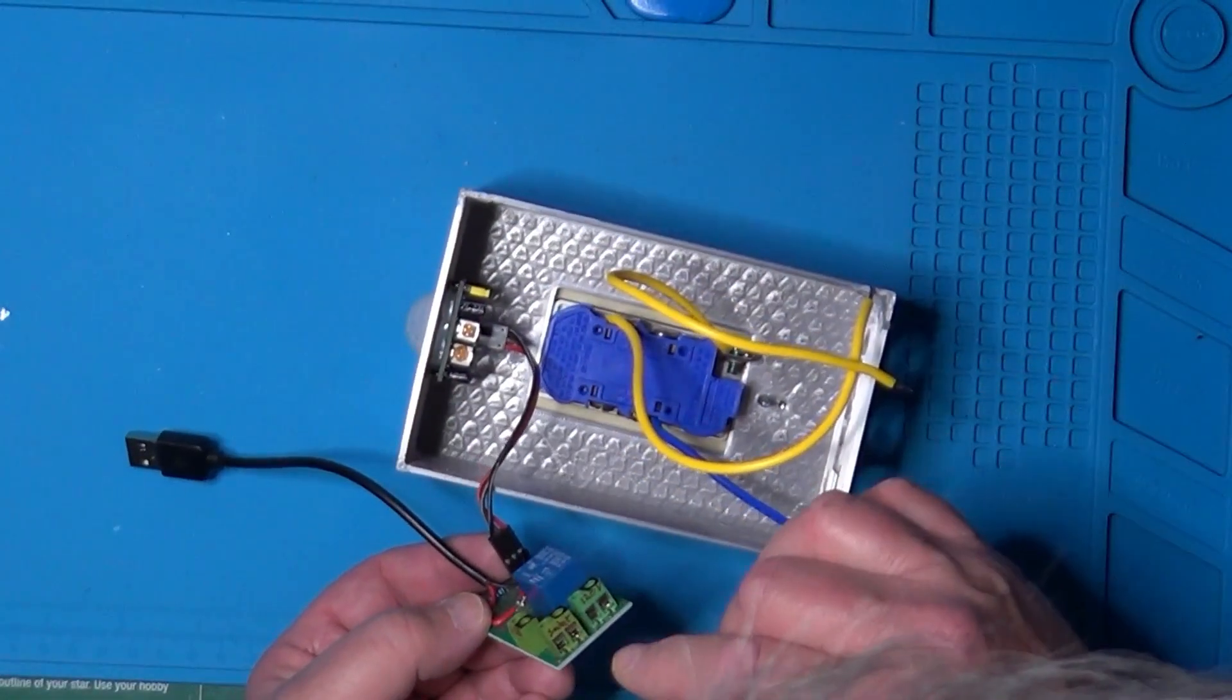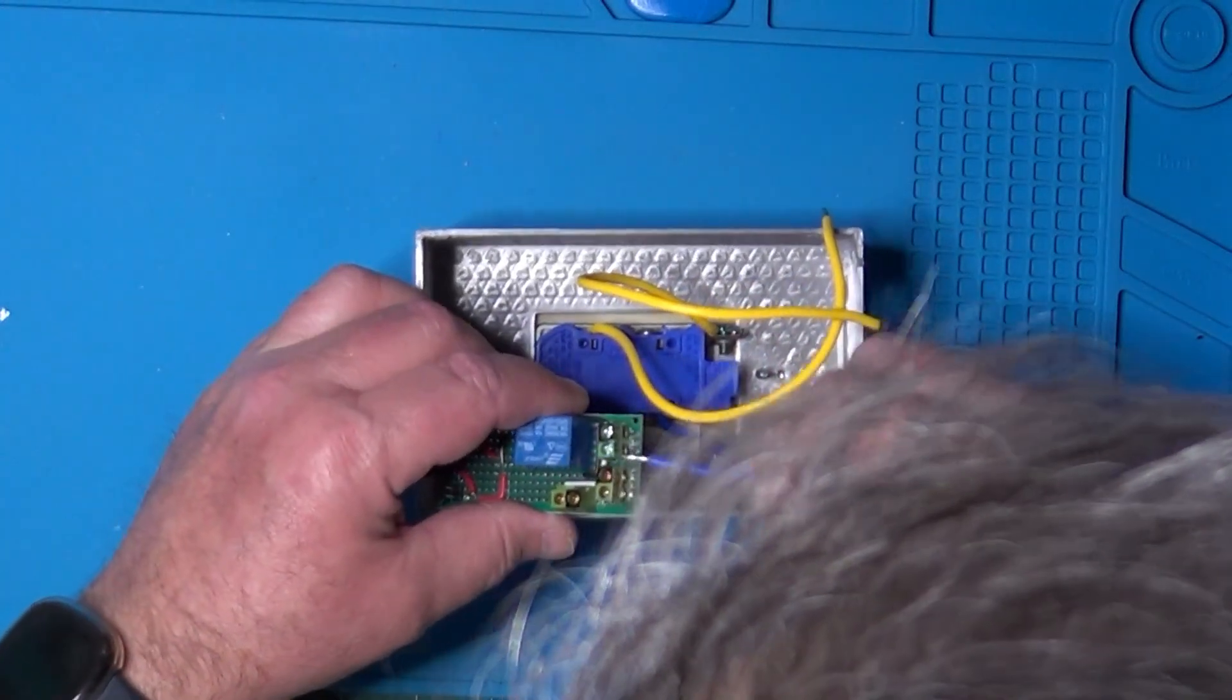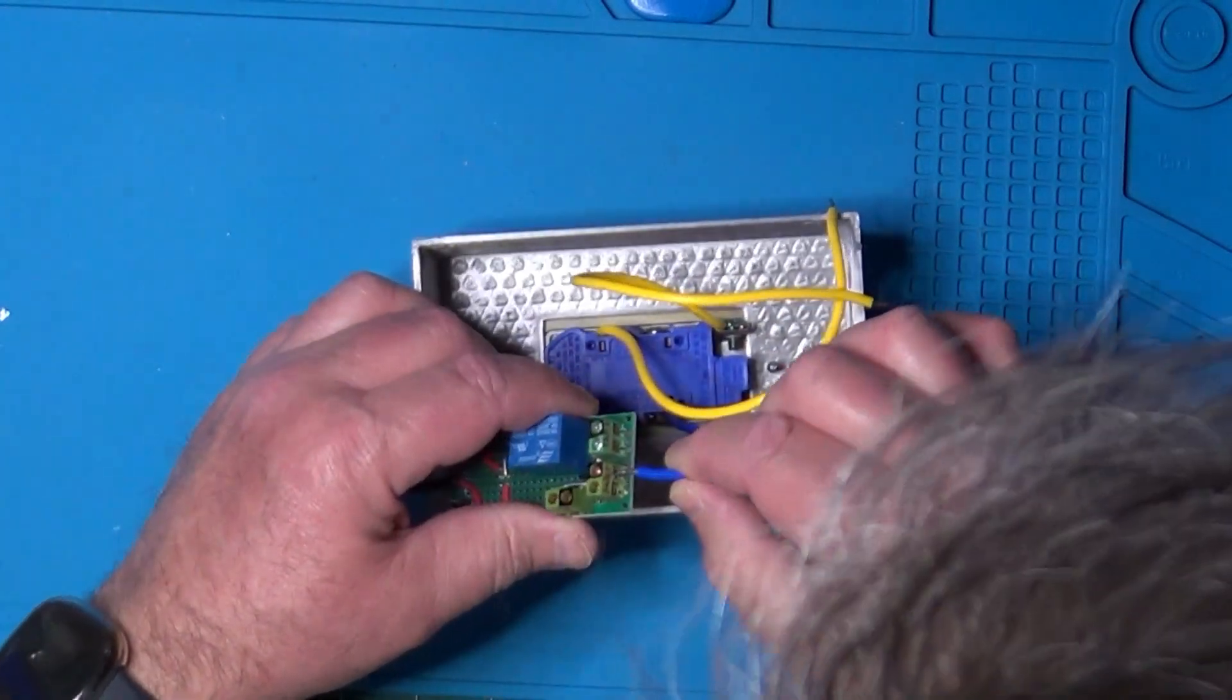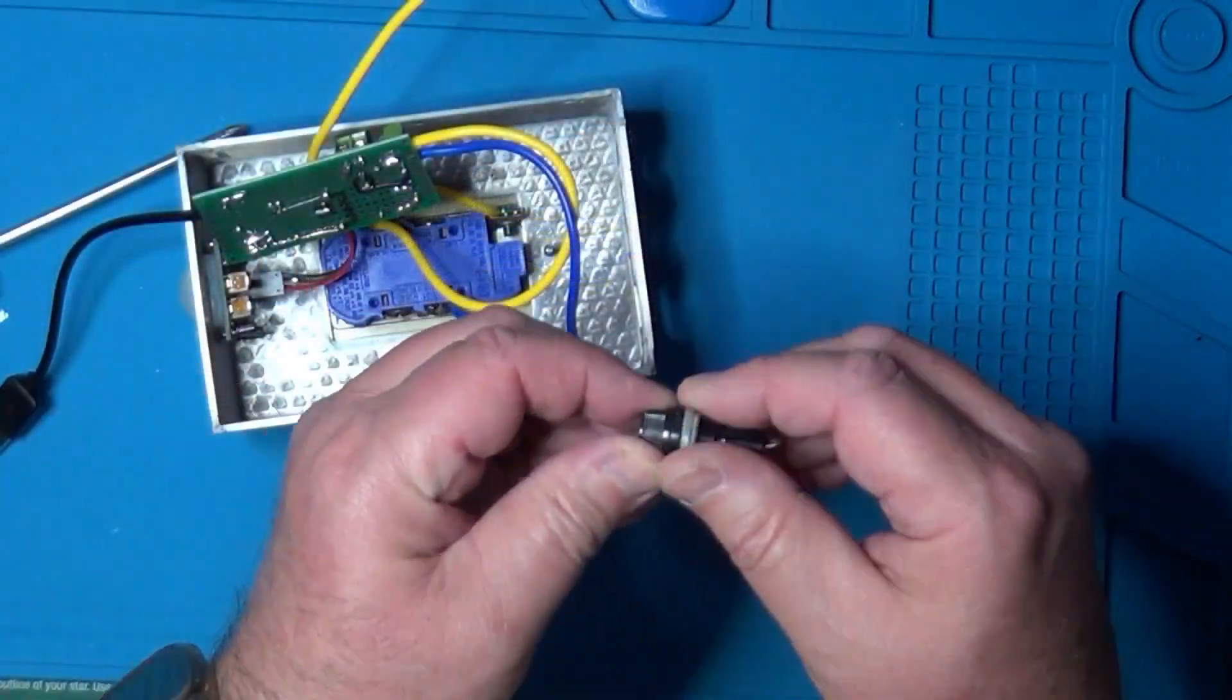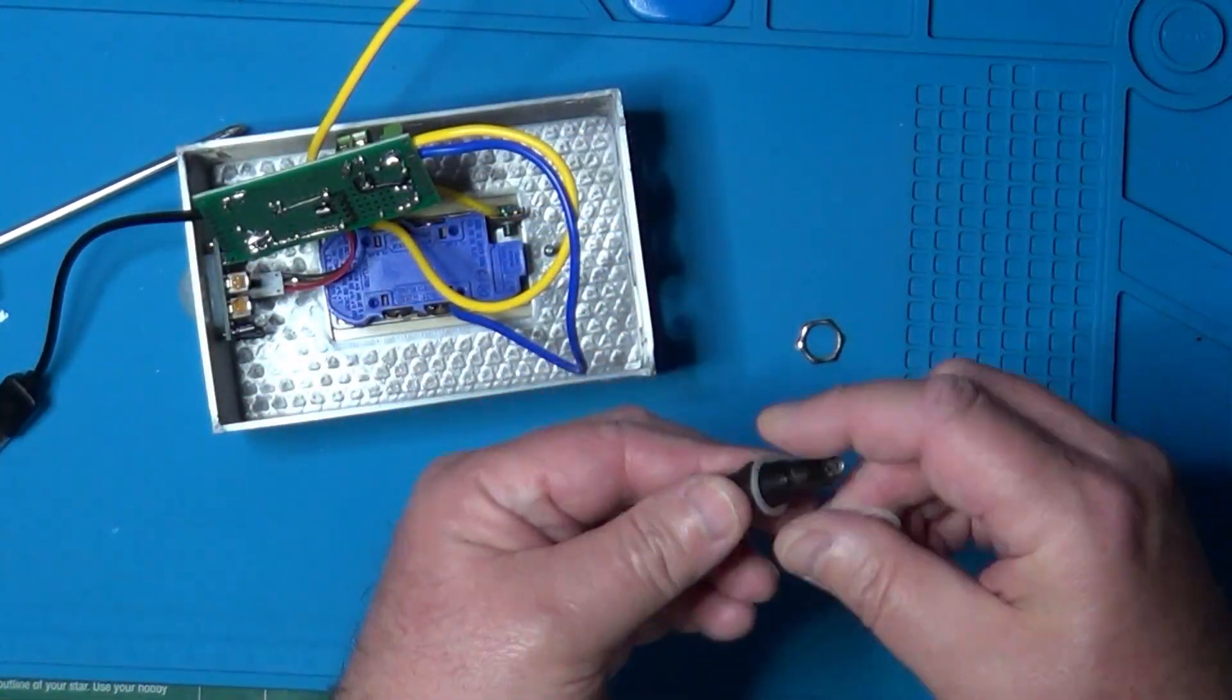After the three-wire flat cable was connected, I attached the socket wires to the appropriate terminal block. Once that was done, I attached the fuse holder to the other side panel, using the hardware that comes with it.